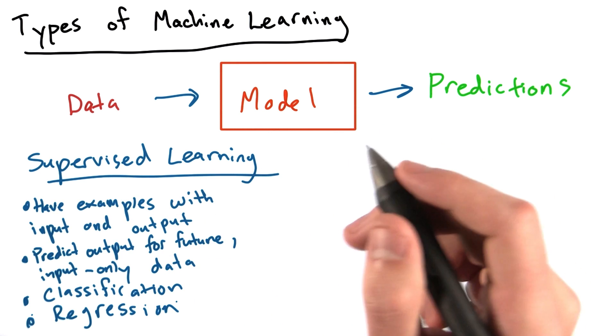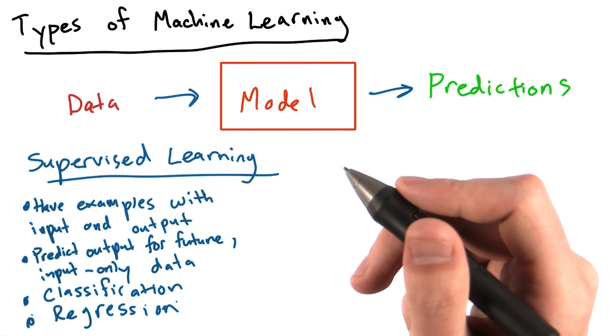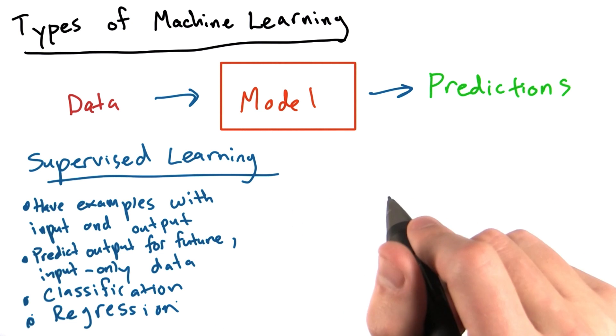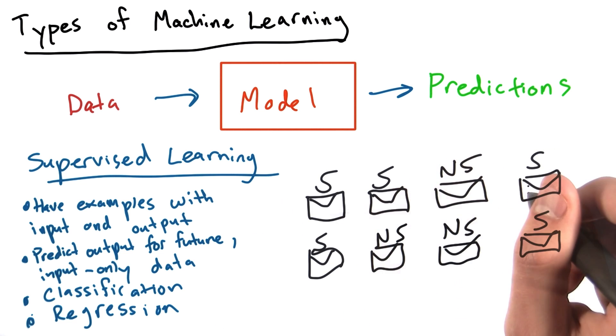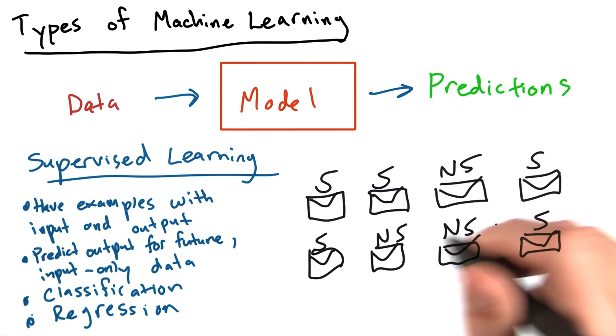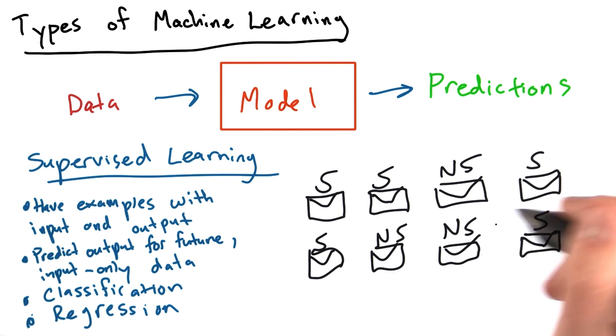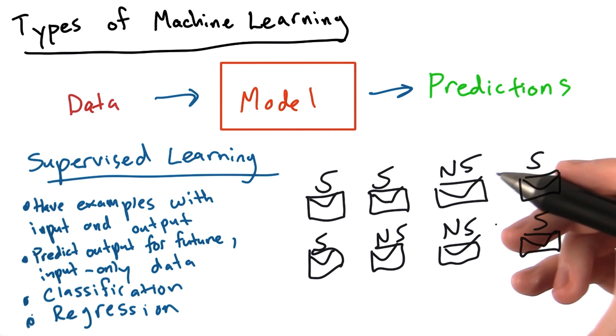For example, if we were detecting spam using supervised learning, we might have 100 emails where we know whether or not they're spam. We can use these emails where we know whether or not the email is spam and train a model that can predict whether or not a future email will be spam based on a bunch of characteristics. Maybe its contents or whether or not it has an attachment or things like that.